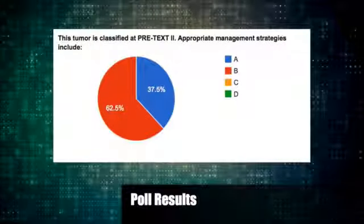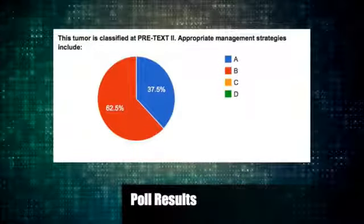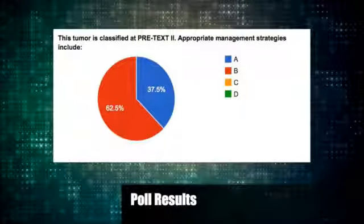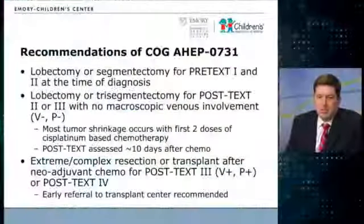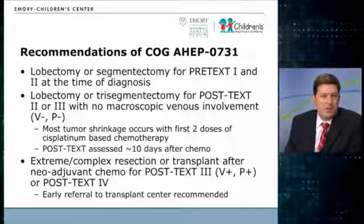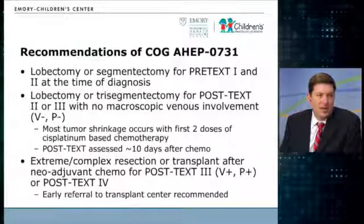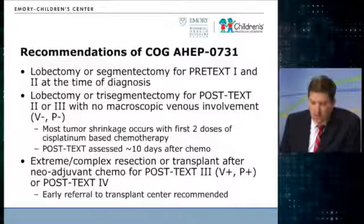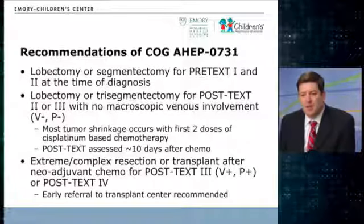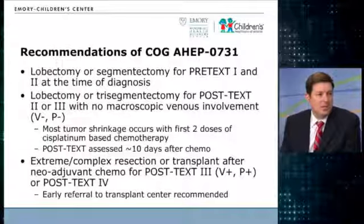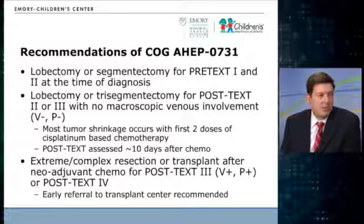If you're going to make a decision based on PRETEXT staging, you have to be able to trust your imaging, and that may factor into whether you proceed directly to surgery. About 60% of the audience is going with chemotherapy first. COG recommendations say that if you can get a clear one-centimeter margin on a PRETEXT II with no vascular involvement, you go for the hepatectomy upfront. They're also pretty clear that PRETEXT I and II, if the surgeon feels competent, should be resected locally.